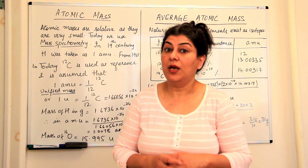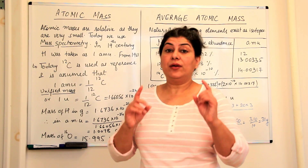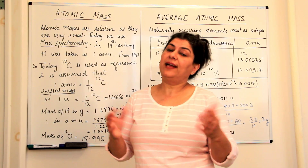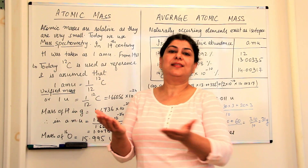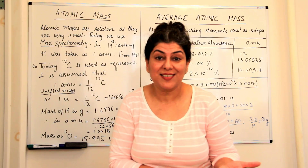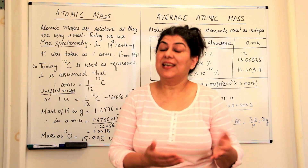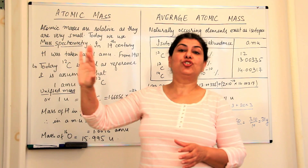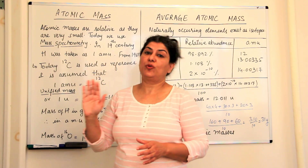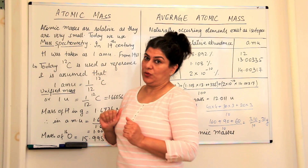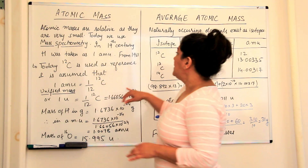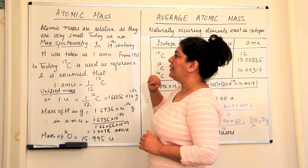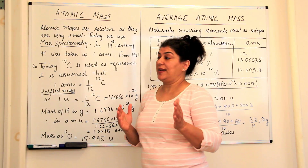Why did they take hydrogen? Because hydrogen is the lightest element and therefore they said there can be no smaller mass than this, so hydrogen should have a mass of one atomic mass unit.